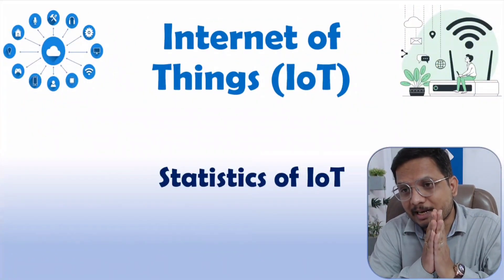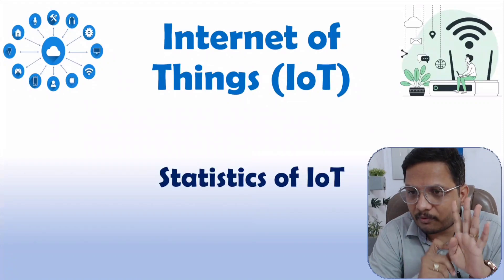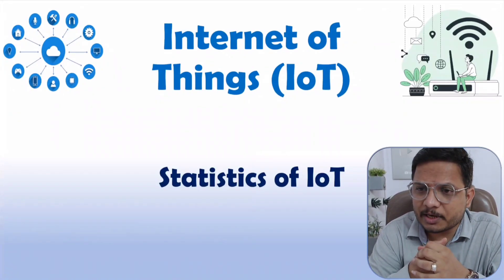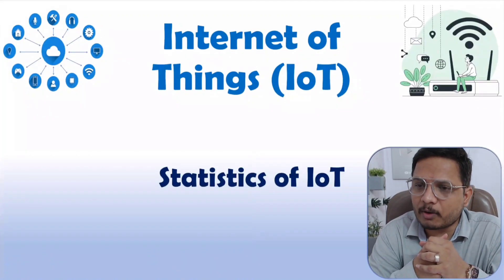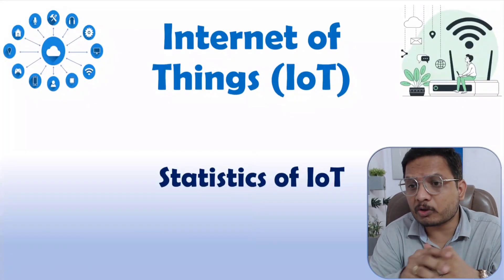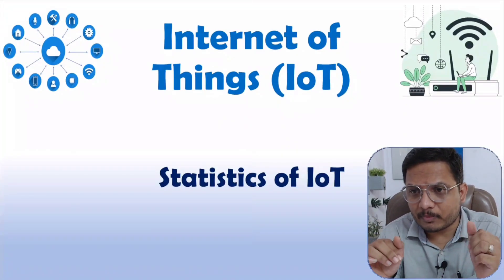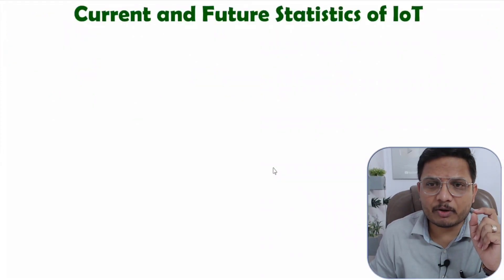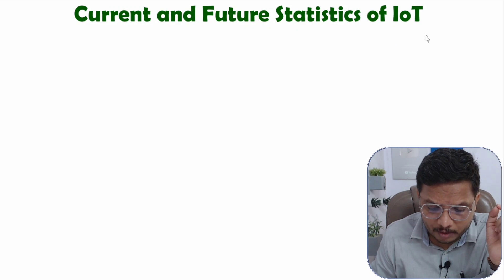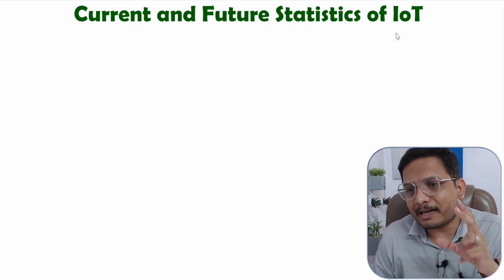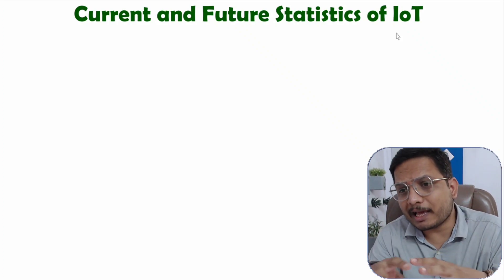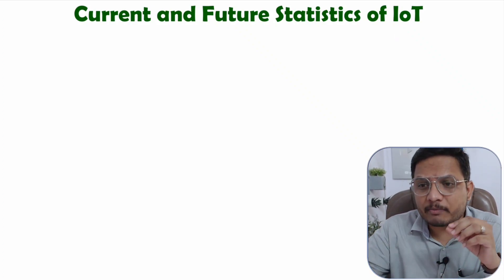Hello friends, welcome to Engineering Funda family. This is my fourth video in the video lecture series on Internet of Things. In this video, I'll be discussing the statistics of IoT — what the future scope of IoT is and how the growth of IoT is happening in the current world. Let us start with the first agenda: current and future statistics of IoT. To understand this, I'll explain a graph showing how IoT growth is happening with respect to years.